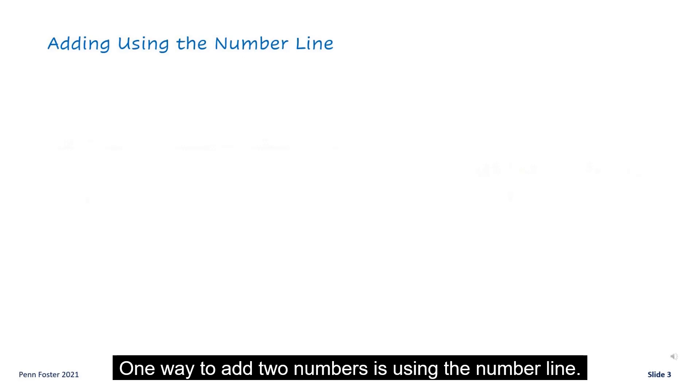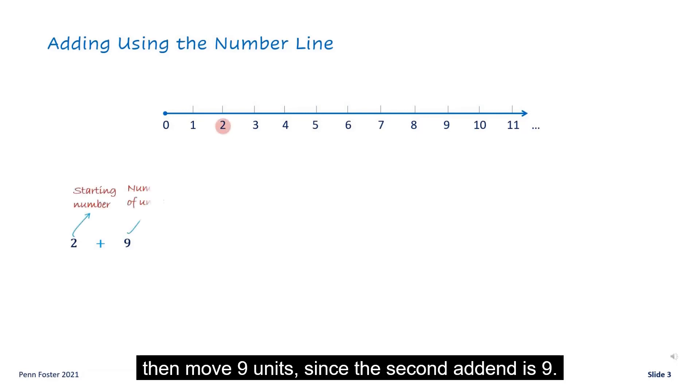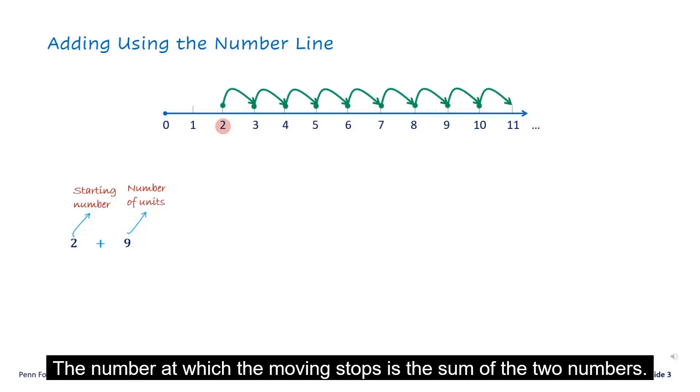One way to add two numbers is using the number line. To add two and nine, start on the number line at the first addend, two, then move nine units since the second addend is nine. The number at which the moving stops is the sum of the two numbers.